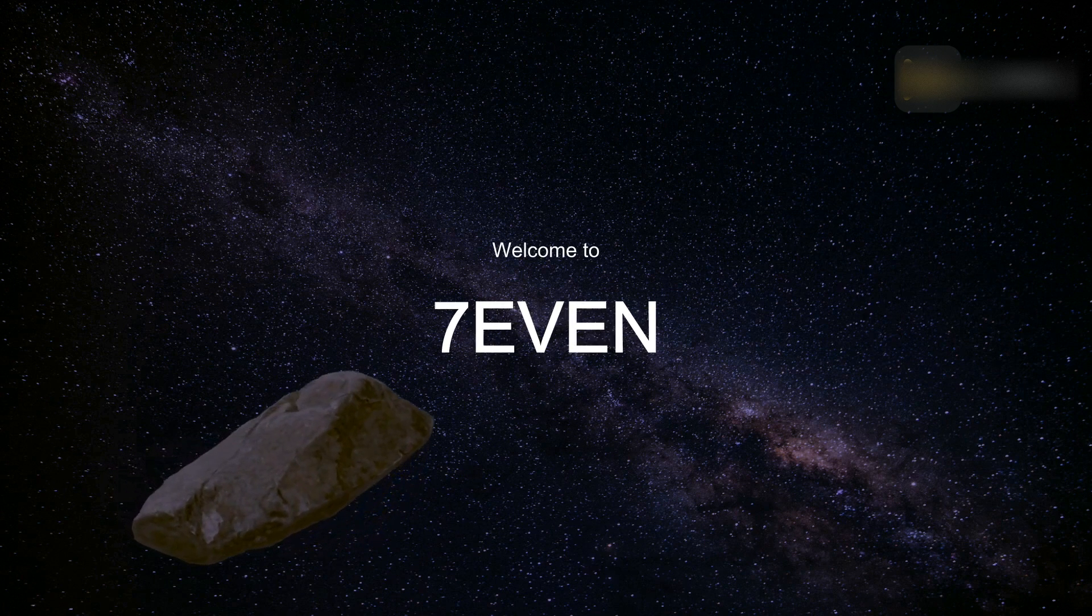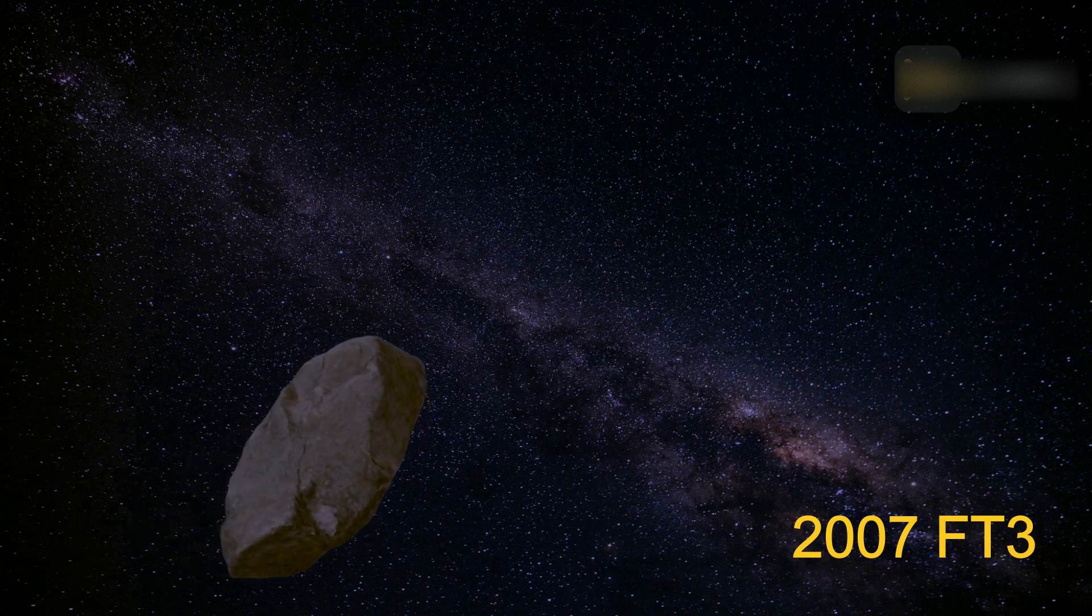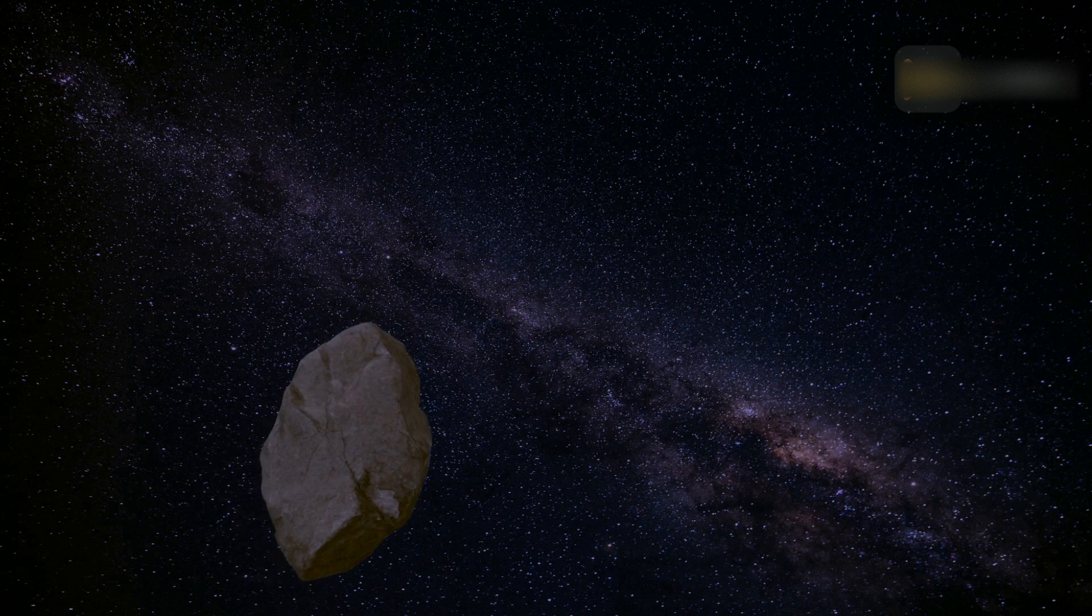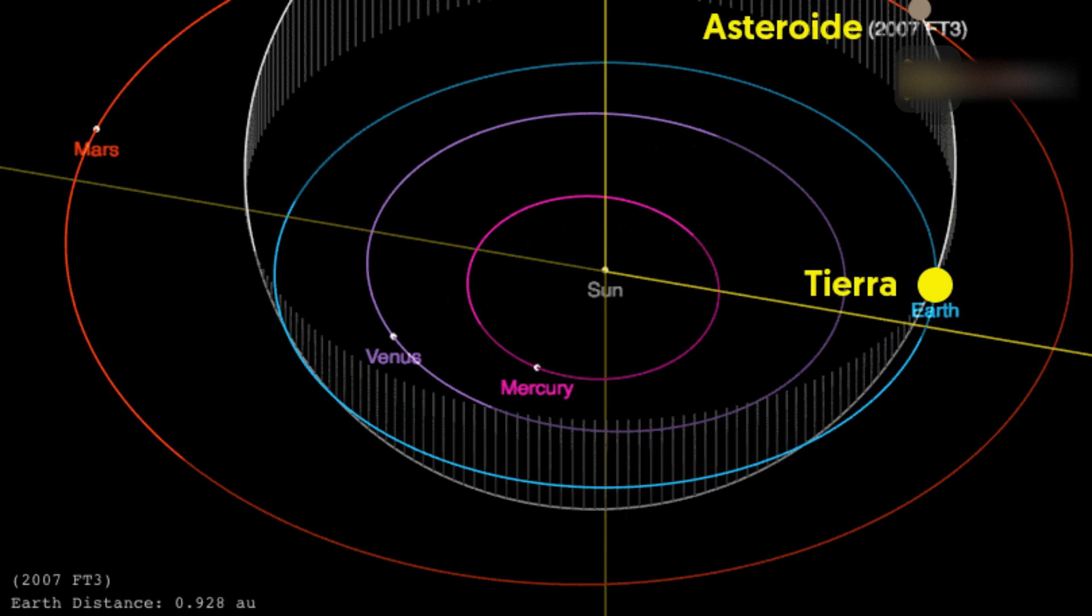NASA had suggested an asteroid named 2007 FT3 was first spotted floating through space in 2007 and could be about to strike our planet this year. 2007 FT3 is an asteroid whose orbit crosses the orbit of Earth. NASA JPL has classified 2007 FT3 as a potentially hazardous asteroid due to its predicted close pass with Earth.